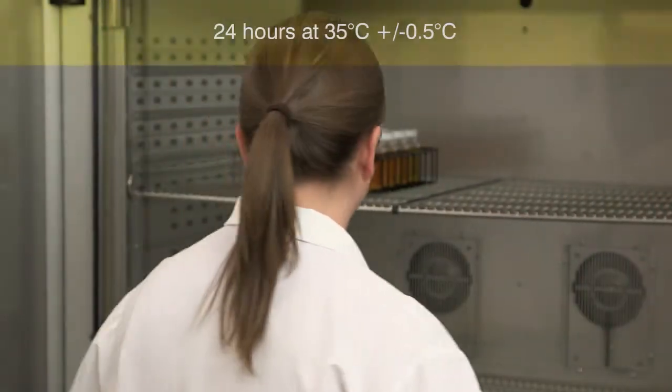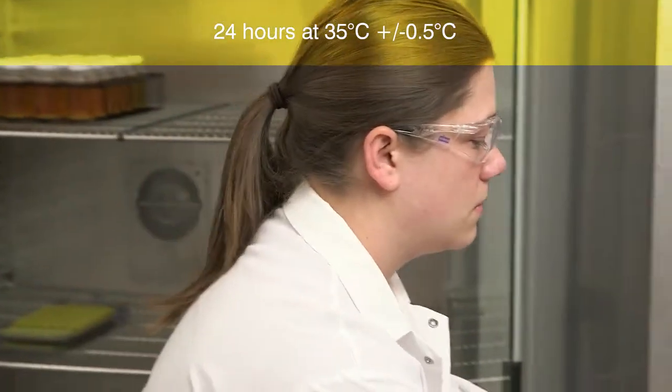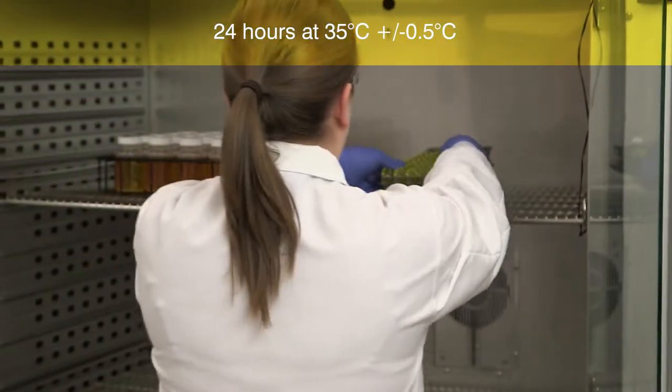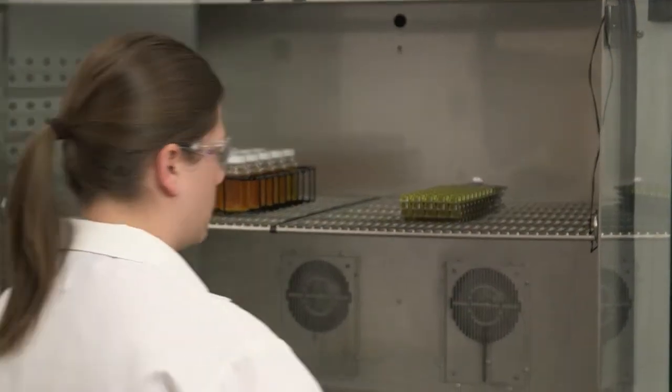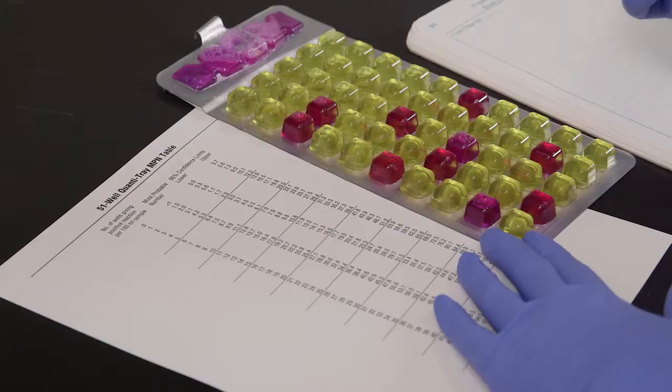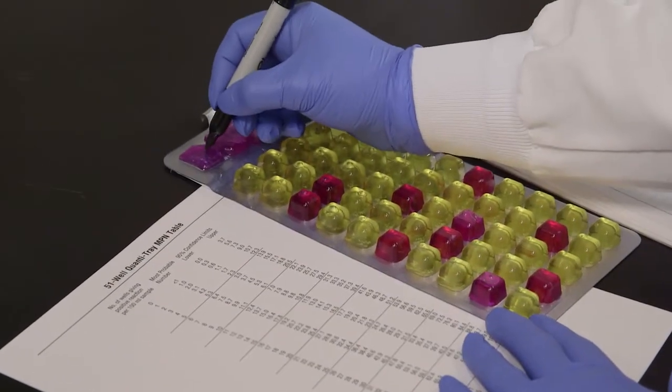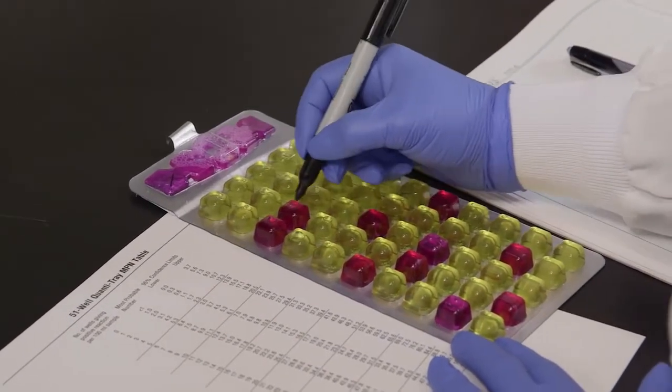Incubate the sealed tray for 24 hours at 35 degrees centigrade, plus or minus 0.5 degrees centigrade or according to your local regulations. After incubation, mark each red or magenta well with a permanent marker including the large overflow well.